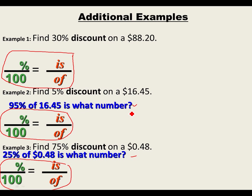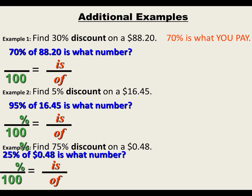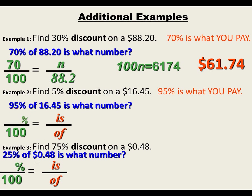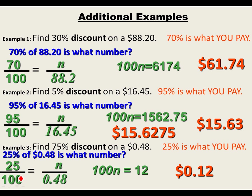Let's go through the answers. For the first problem, you could have done 0.70 times 88.20 — that's 70% since the discount is 30%. You would still get $61.74.